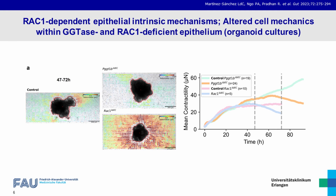Strikingly, experiments with organoids indicated the occurrence of primary epithelial alterations. For instance, 3D traction force microscopy revealed outward-directed deformations indicative of forced relaxation in GGTase- and RAC1-deficient organoids.